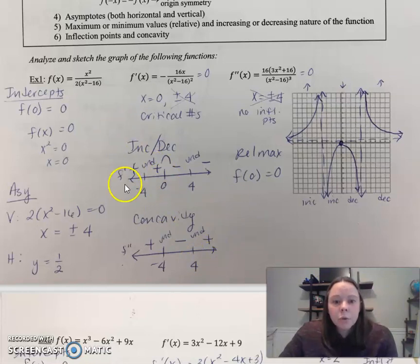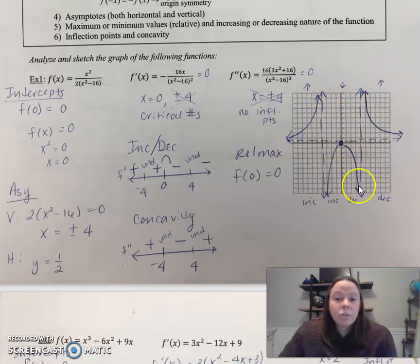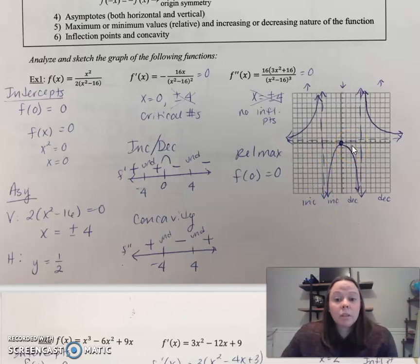I think we're ready. Notice underneath I wrote increasing, increasing, decreasing, decreasing — see how that lines up with the number line? And then I made arrows above: arrow up, arrow down within this interval, and arrow up. That helps guide your sketch. Make sure you get your intercepts on the graph, asymptotes, any relative extrema, and any inflection points — you have to accurately plot those.